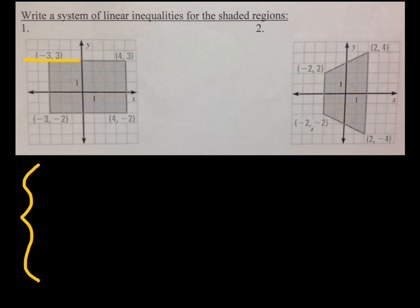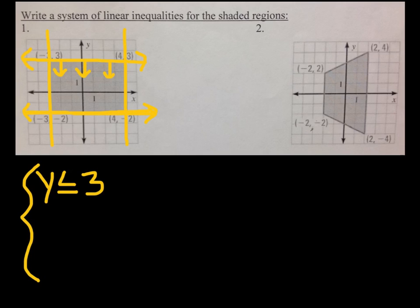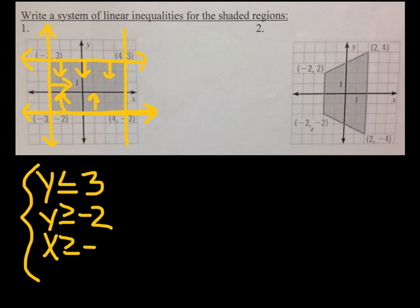This graph has 4 lines — all solid. Starting with the horizontal line: that's y equals 3, shaded below, so y is less than or equal to 3. The line at the bottom: y equals negative 2, shaded above, so y is greater than or equal to negative 2. The line on the left is x equals negative 3, shaded to the right, so x is greater than or equal to negative 3. And x equals 4, shaded to the left, so x is less than or equal to 4. That's your system of linear inequalities.